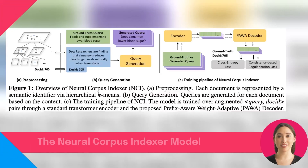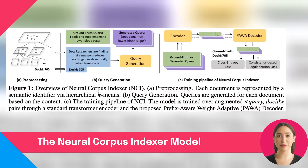So, what is the Neural Corpus Indexer model? It's an end-to-end deep neural network that unifies the training and indexing stages. It is designed to significantly improve the recall performance of traditional methods. The model consists of three components: Query Generator and Prefix-Aware Weight Adaptive decoder. Let's talk about each of these techniques in more detail.